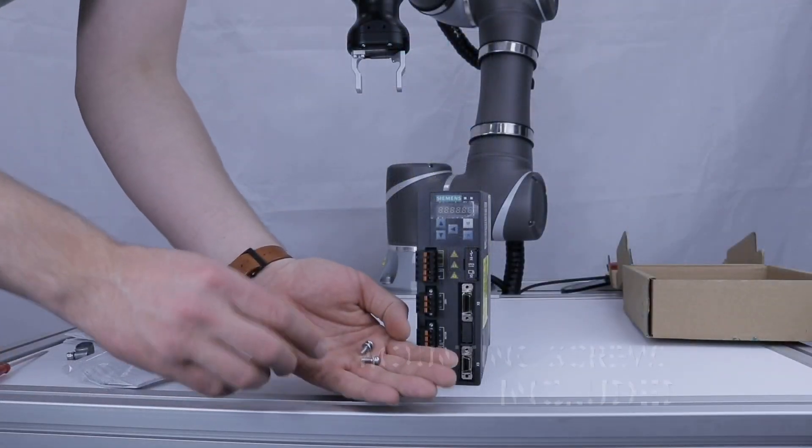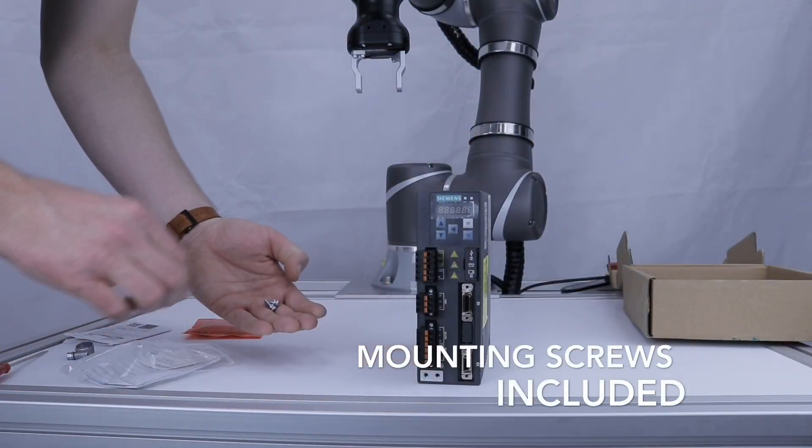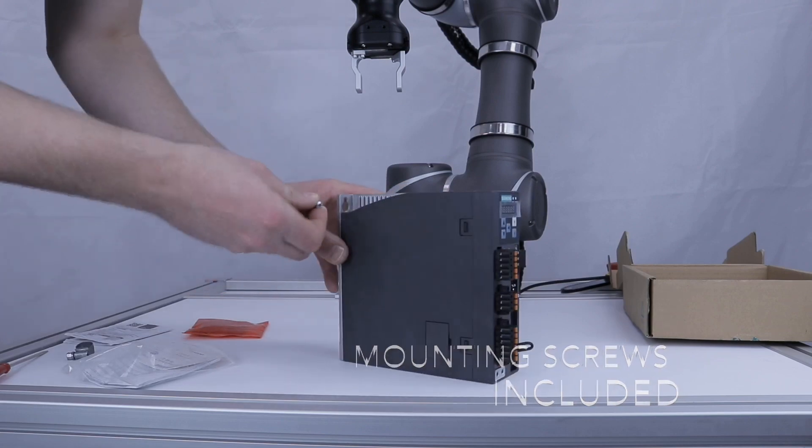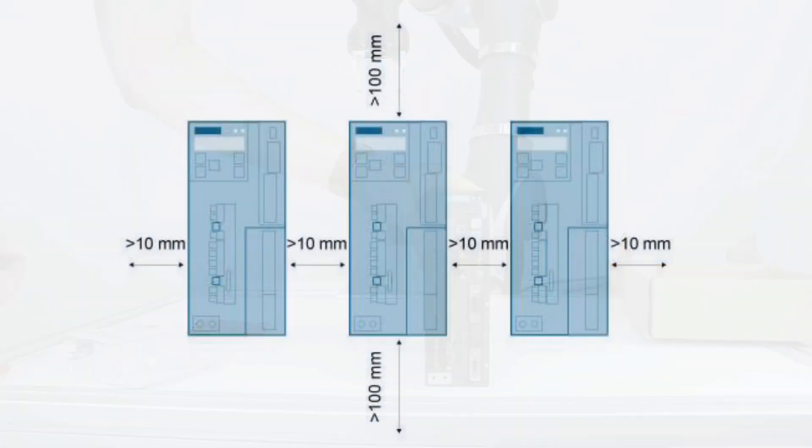Use the provided screws to mount the drive. The drive cannot be mounted on its side. The following clearances must be applied when mounting the unit. There must be at least 100mm of clearance above and below and 10mm either side of the unit.